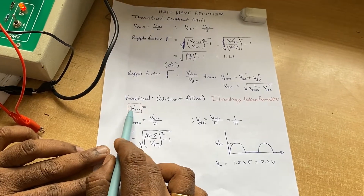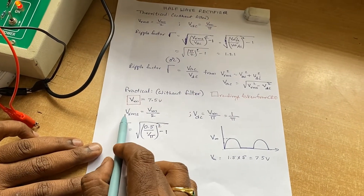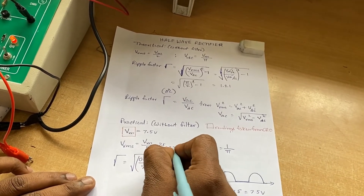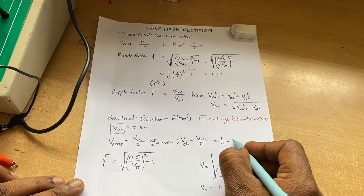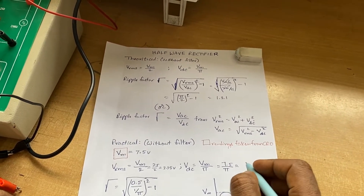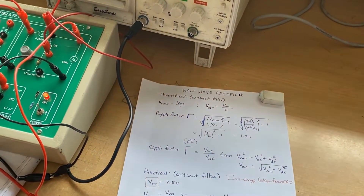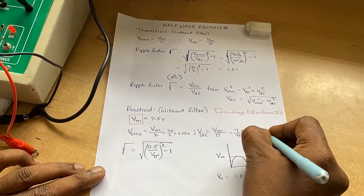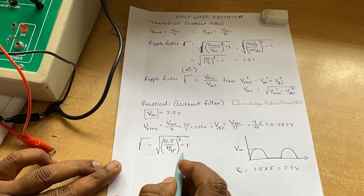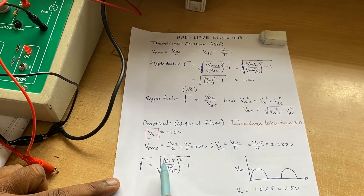These boxed values are the readings to be taken from the CRO. Vm is 7.5 volts. Next, find Vrms, which equals Vm divided by 2, giving 7.5/2 = 3.75 volts. Next, Vdc equals Vm divided by π — so 7.5/π equals 2.387 volts. The ripple factor formula is: γ = √[(Vrms/Vdc)² − 1].